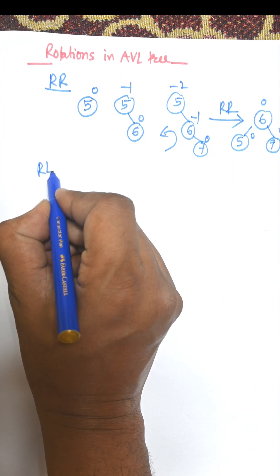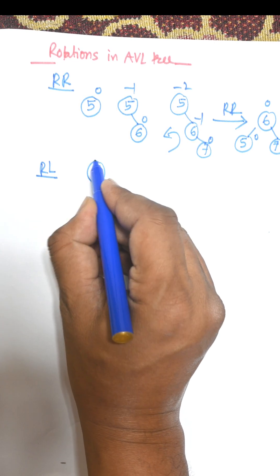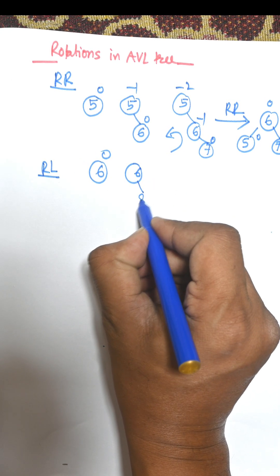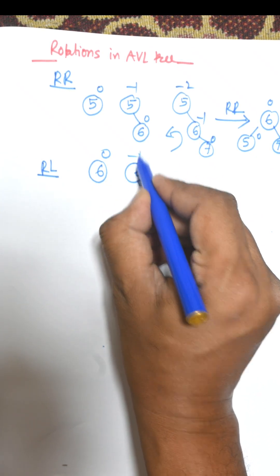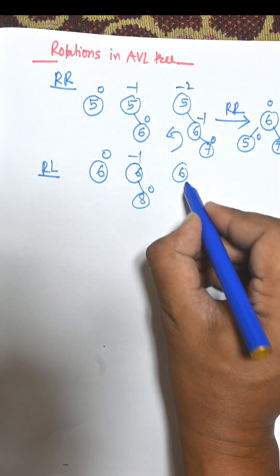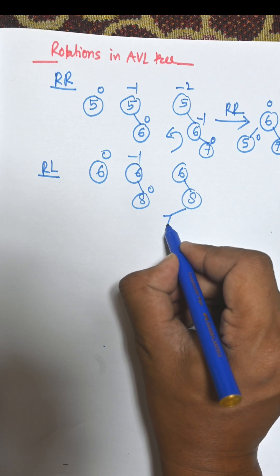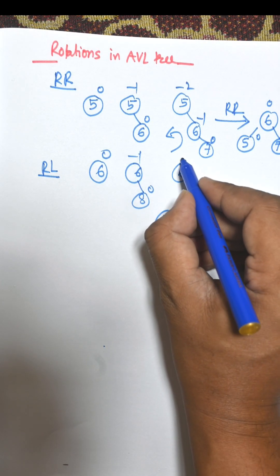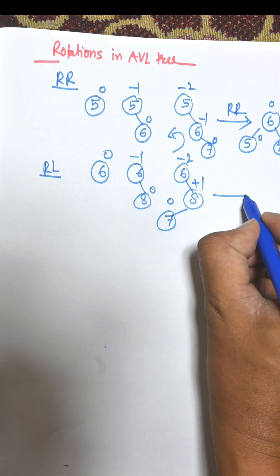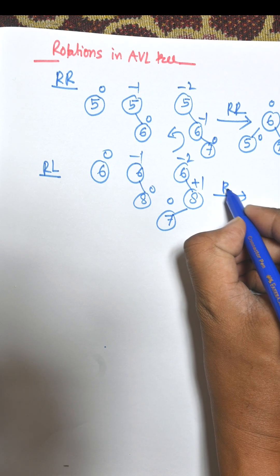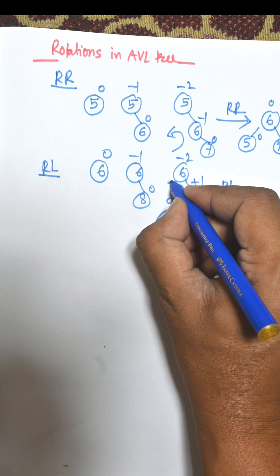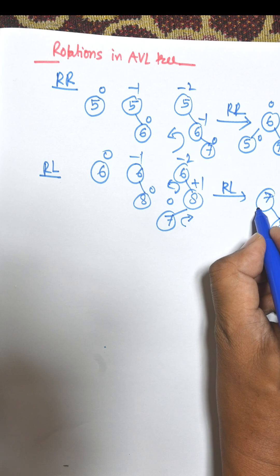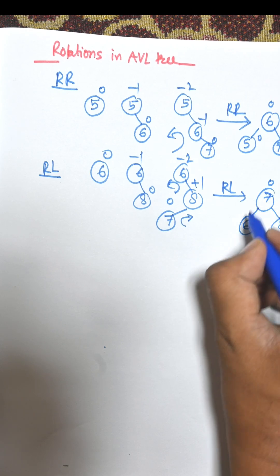Next one is RL rotation, RL means Right-Left. Initially suppose 6 is the node. Then 8 is inserted on the right hand side of 6, that is minus 1, 0. Then suppose 7 is the last node and it goes to the left hand side of 8. So this is an RL case. Height is minus 2, plus 1, and 0. We need to perform RL rotation: first clockwise, then anticlockwise. Clockwise means 7 will be the root, 8 goes to the right hand side of 7, and 6 goes to the left hand side of 7. This gives 0, 0, 0.